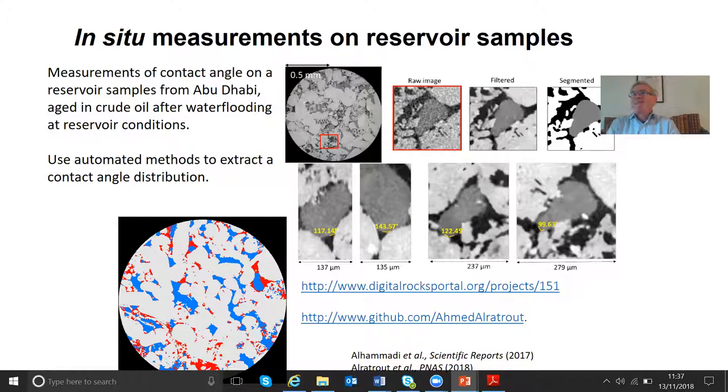Surface active components of the crude oil can stick to the surface and that makes that surface a bit more oily. If it makes it a bit more oily, then that's a bit more oil wet. So here is a two-dimensional cross-section of the rock and this is after I've injected water to displace the oil.